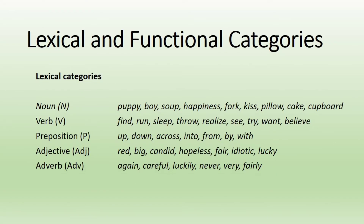We also have lexical and functional categories. Syntactic categories include both phrasal categories such as NP, VP, ADJP (adjective phrase), PP (prepositional phrase), and ADVP (adverbial phrase), as well as lexical categories such as noun (N), verb (V), preposition (P), adjective (ADJ), and adverb (ADV). Each lexical category has a corresponding phrasal category.